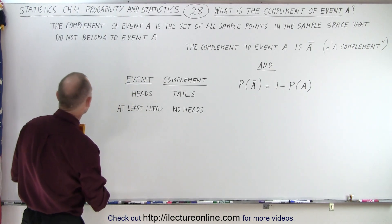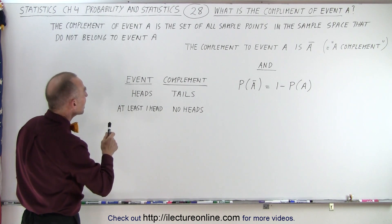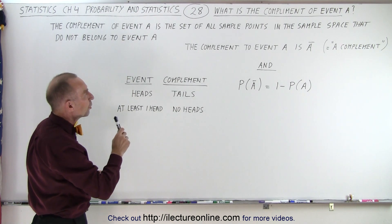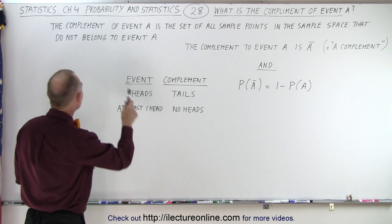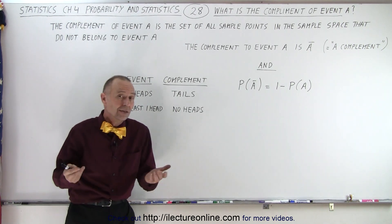Well, here's the definition. The complement of event A is the set of all sample points in the sample space that do not belong to event A.